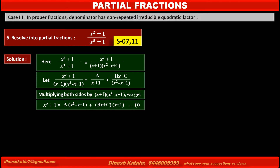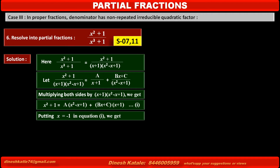The second term becomes (Bx + C)(x + 1). To find the value of A, we cancel the second term by making the factor (x + 1) equal to zero. Therefore, putting x = -1 in equation 1, we get: